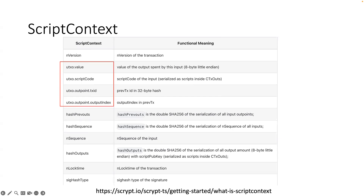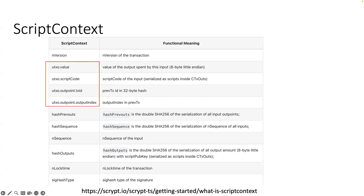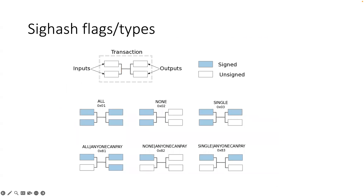That's what we're going to cover today: sighash flags. How many of you have heard this term before? So at least some of us have. Can you give a quick summary of your understanding of sighash flags? The flag is a number that encodes which parts of the transaction need to be hashed and signed by the signature — exactly, signed by the signature, yes, correct.